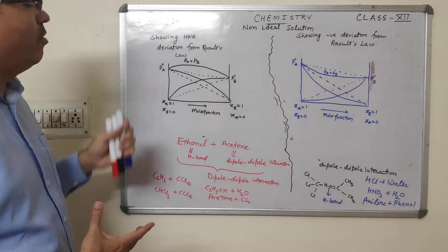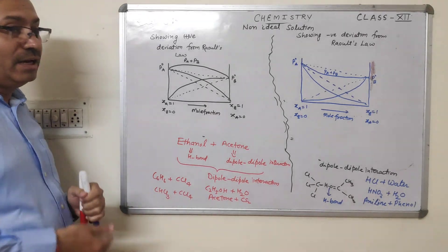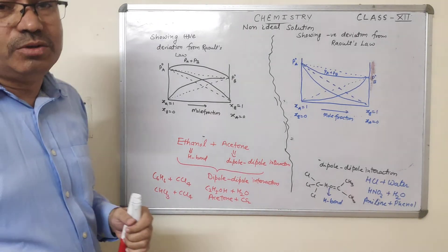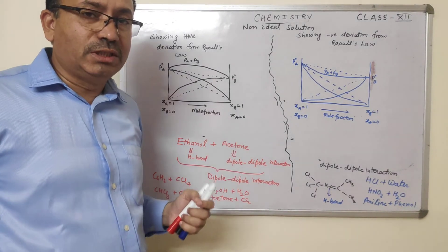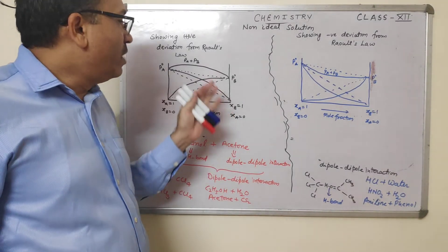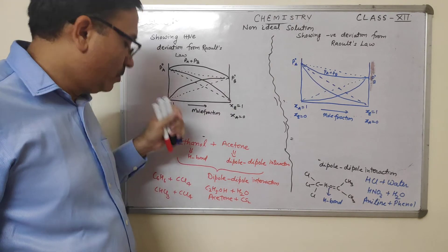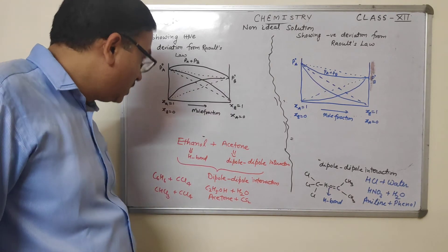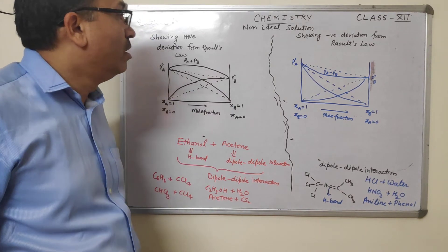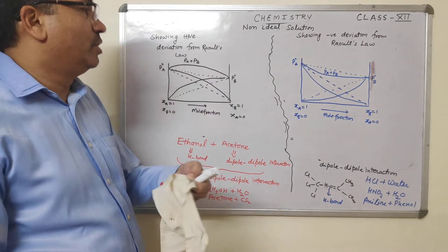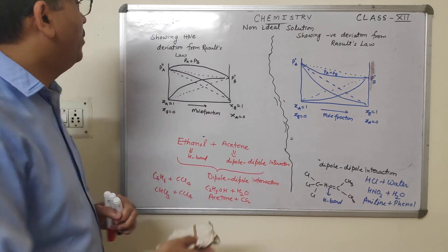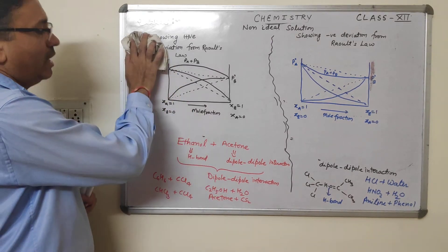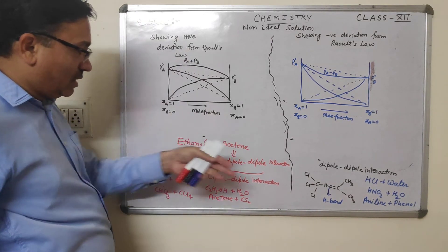This is all about ideal and non-ideal solutions. Every year, one or more questions are asked from this section — it is very important from all examination points of view. The next concept I am taking is azeotropes, as I discussed earlier, azeotropes are formed by positive and negative deviation systems.